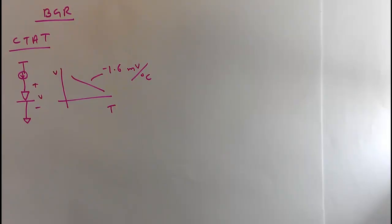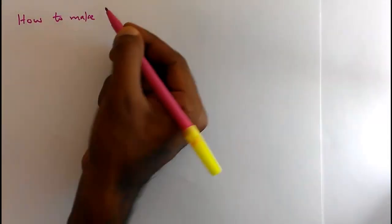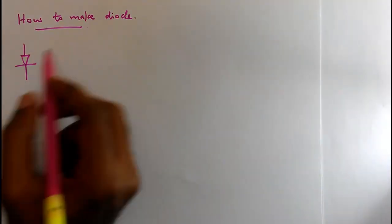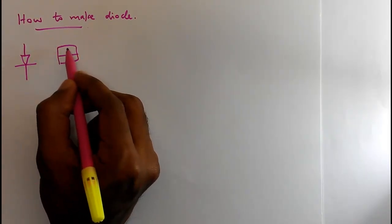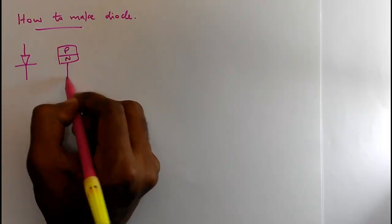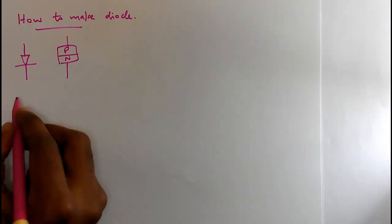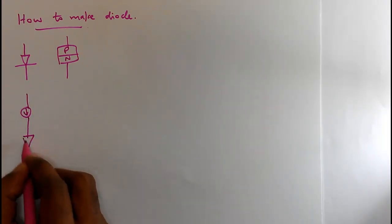Before going to Cadence and doing the simulation, we should know how the diode is manufactured in CMOS process. The diode symbol is essentially a PN junction device. In our CTAT, we need to pass a constant current through the diode.